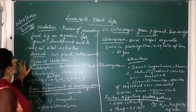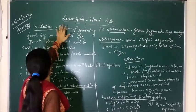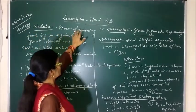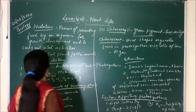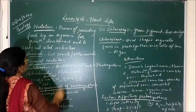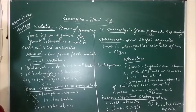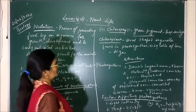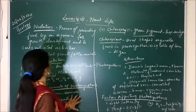Good morning children. Today I will start the new chapter in class 7 biology. The chapter is Lesson 4, that is Plant Life. Today we will study about nutrition, how food is prepared by plants, what are the different requirements for photosynthesis, as well as what is the structure of the chloroplast.